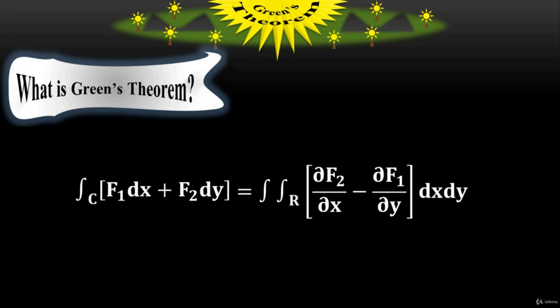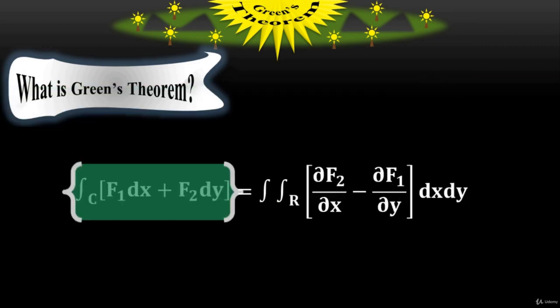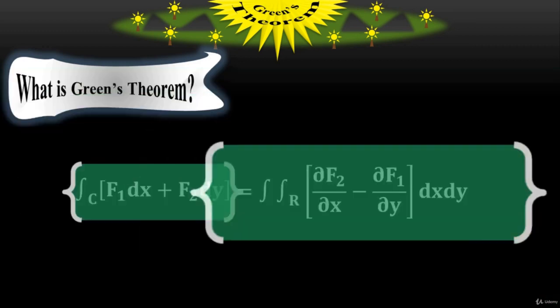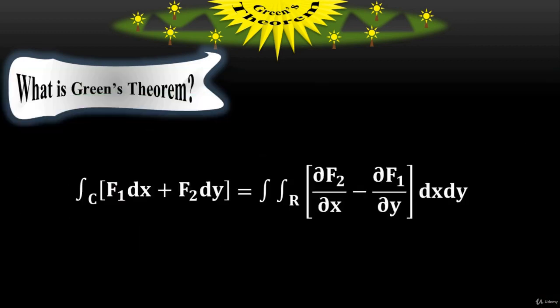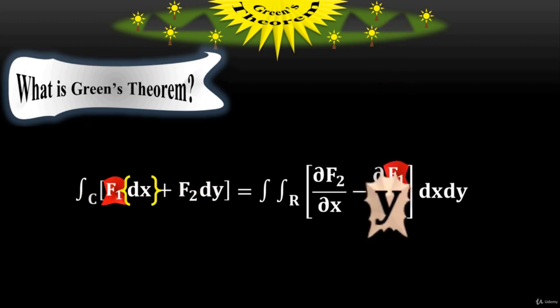According to Green's theorem, the left side always equals the right side. Let me compare the left side with the right side, where function f sub 1 is with dx. On the right side, f sub 1 has been taken partially with respect to y.